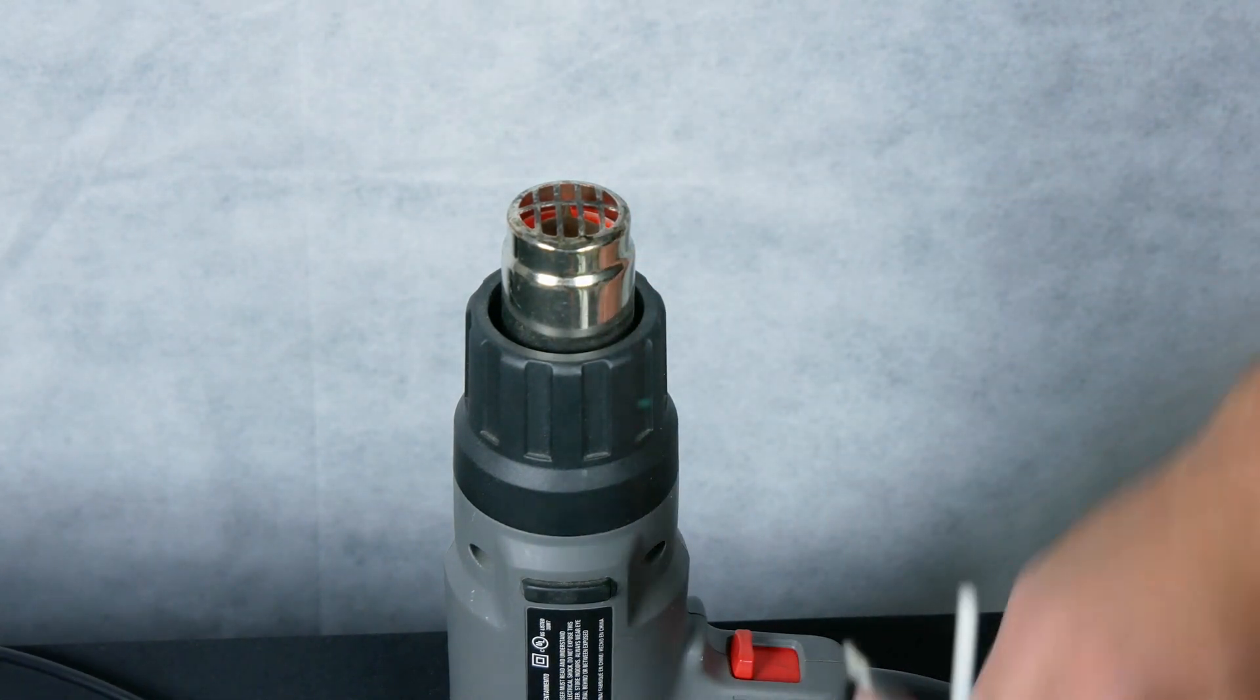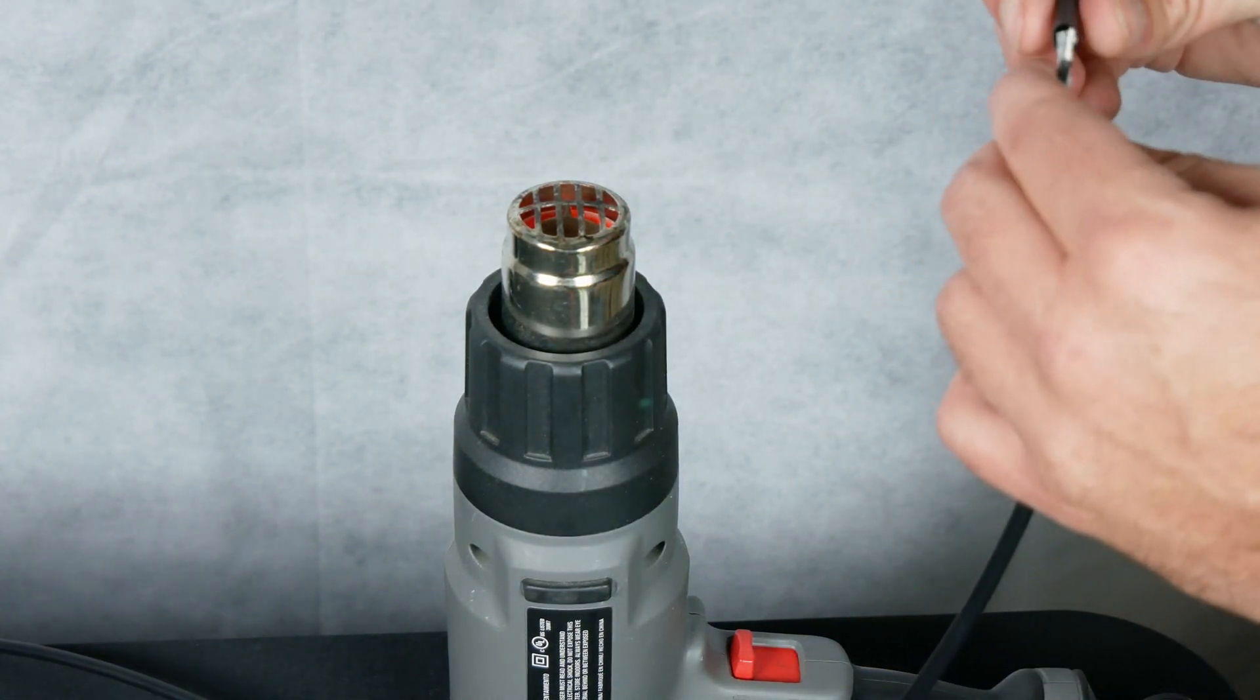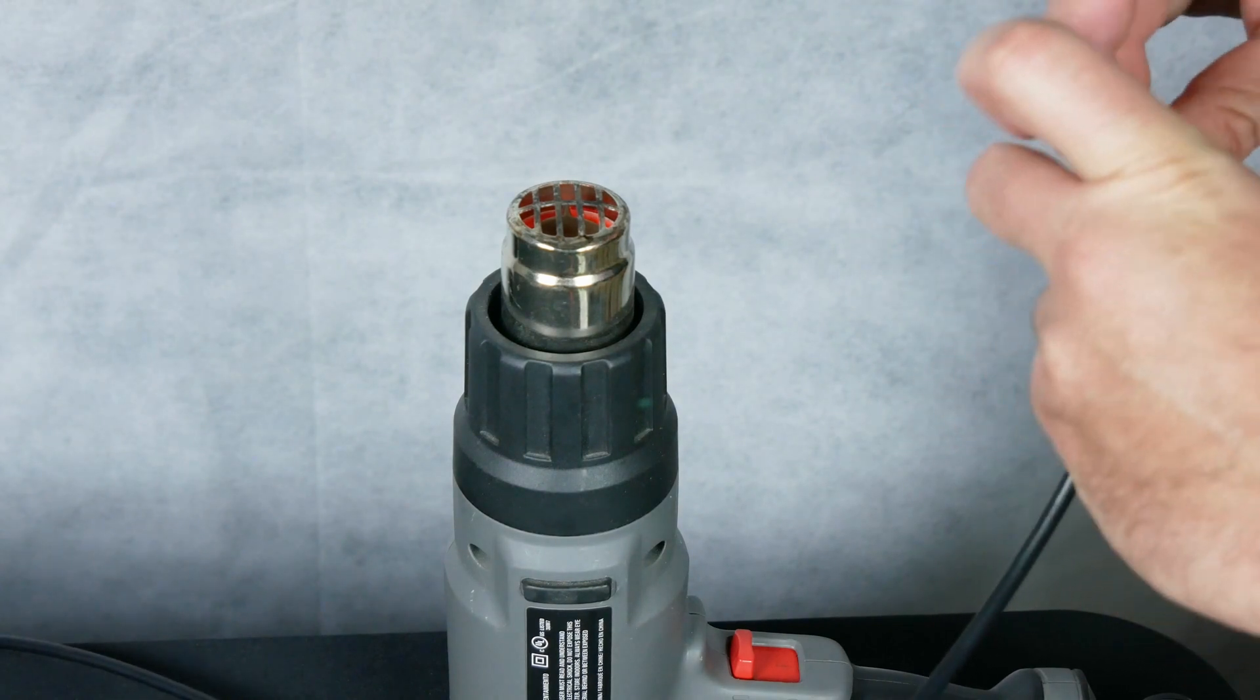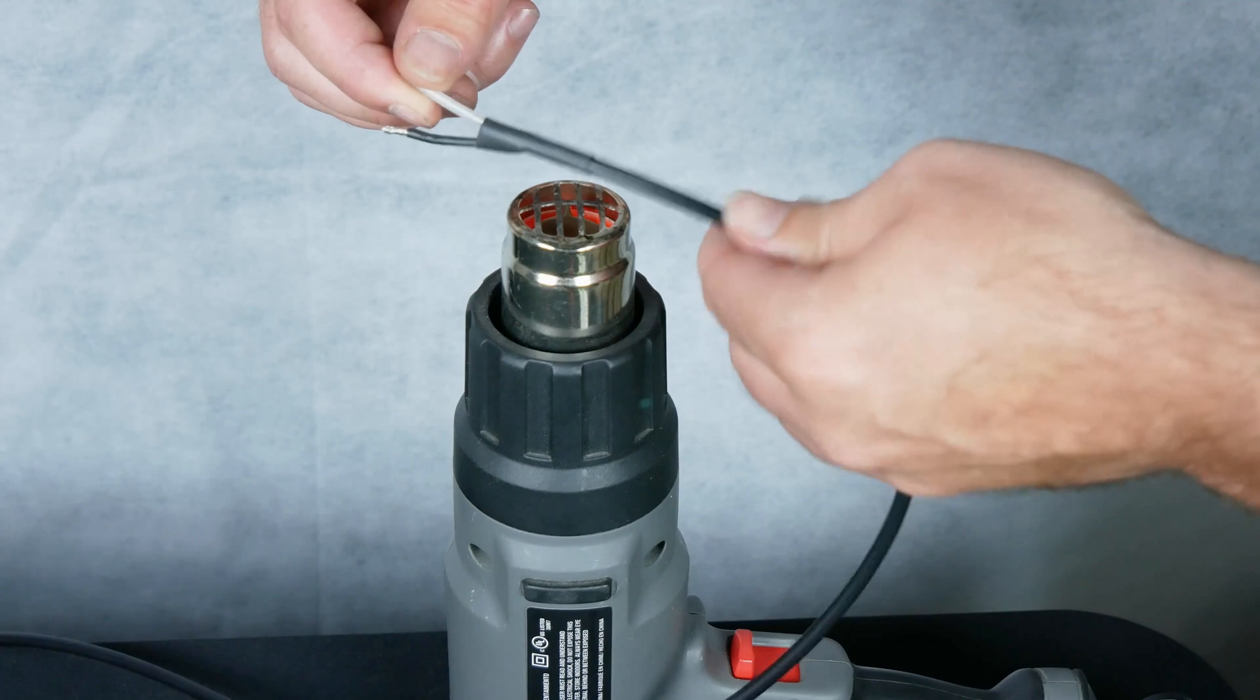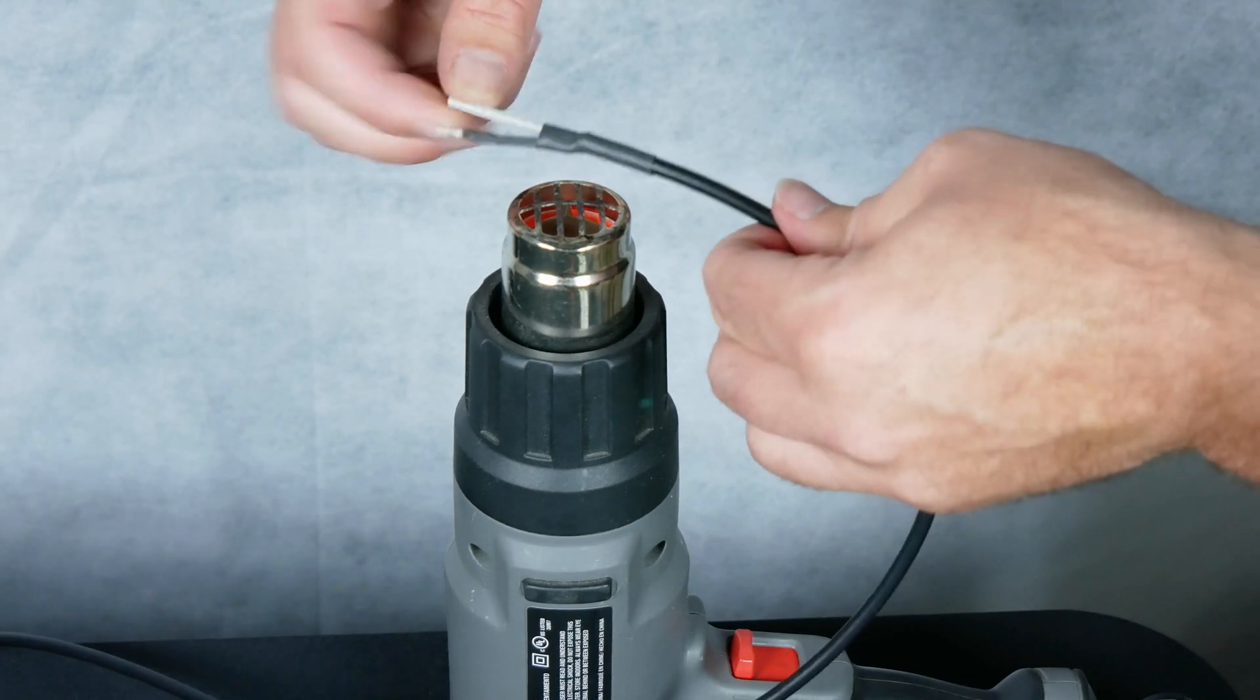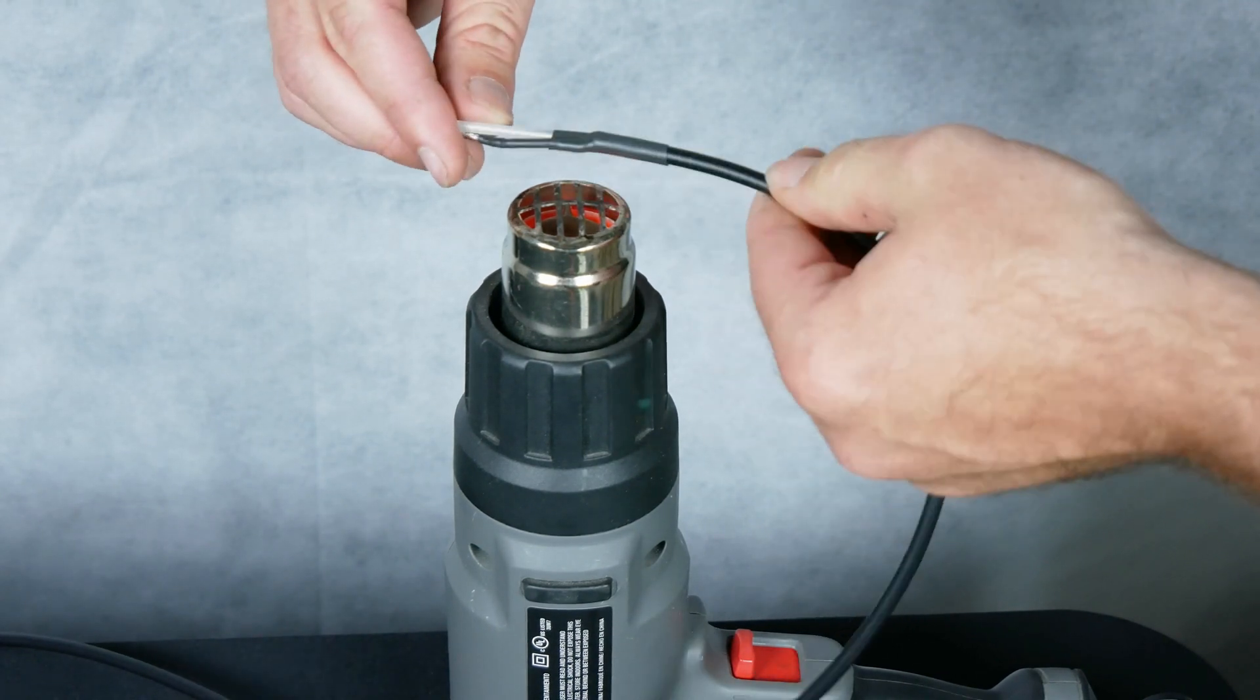After shrinking down the tubing over the shield, grab another piece of tubing and place that so it's overlapping the end of the outer jacket of the cable. Get it in place and then shrink that down.